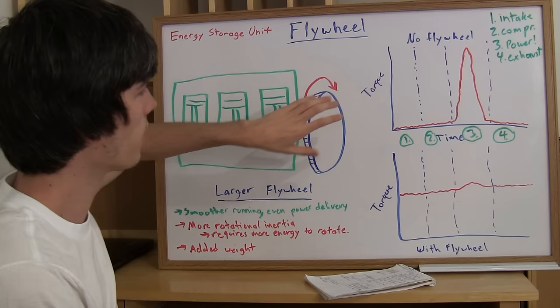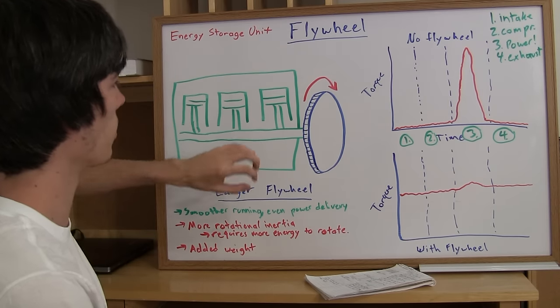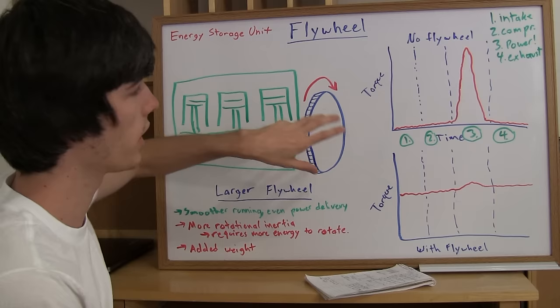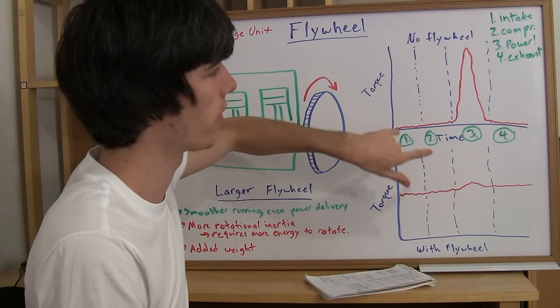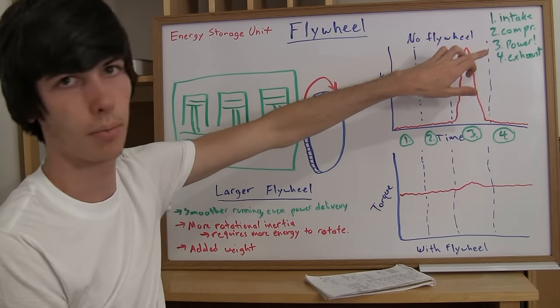So the basic idea is if you didn't have that flywheel on there, you'd have really uneven power distribution. So I went through here and we've got the four strokes divided up: intake, compression, power, and exhaust.